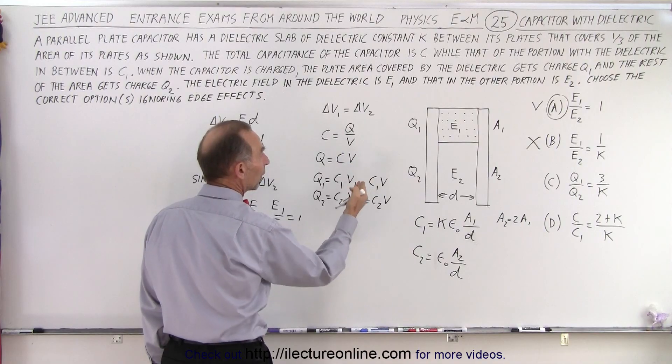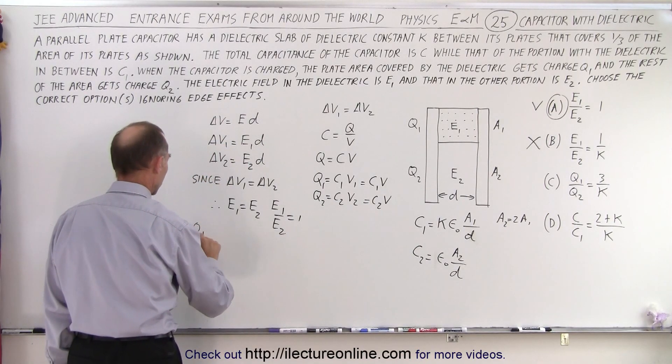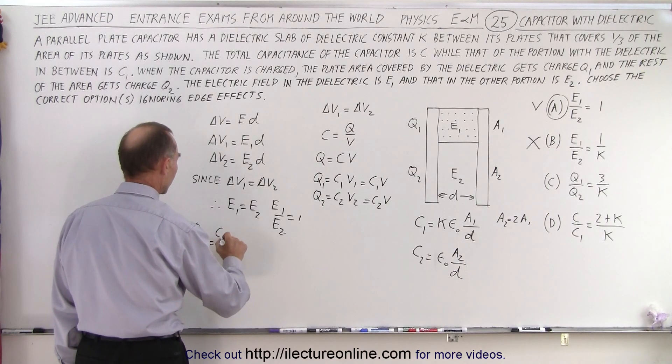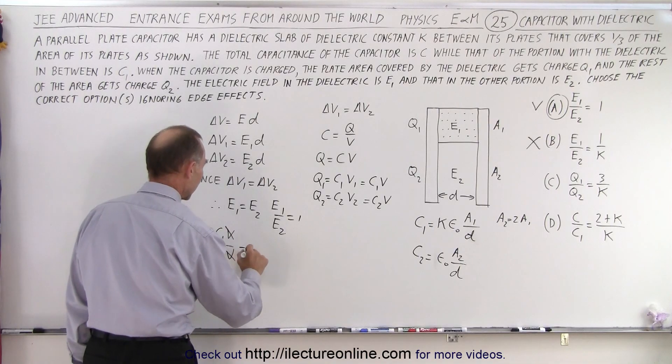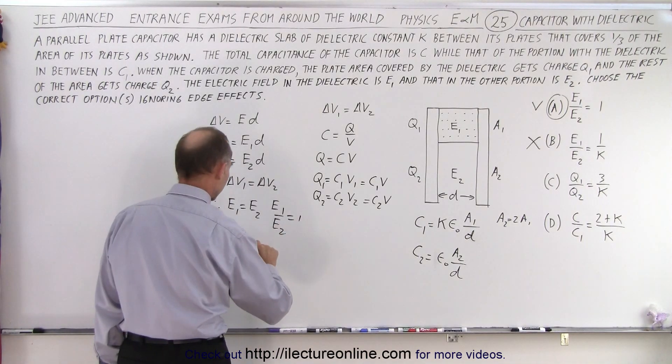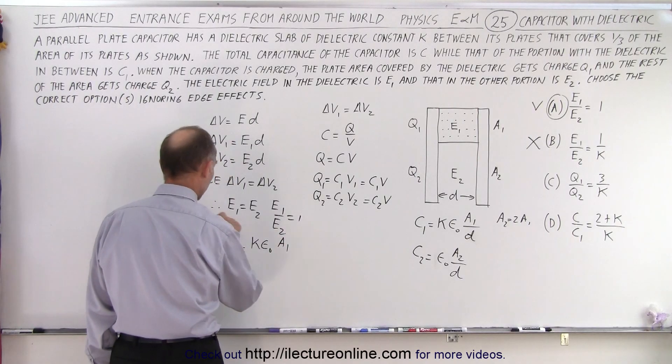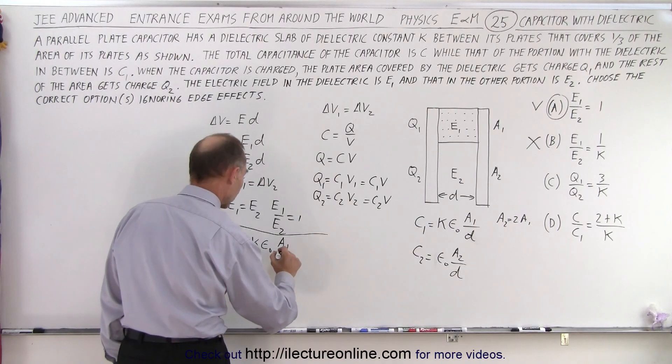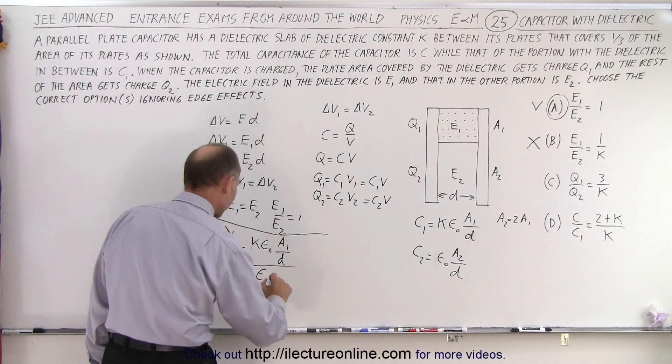So we know that Q1 over Q2 is equal to C1V over C2V, of course the V's are the same, and so C1 is equal to K epsilon naught times A1, and let me draw a line here so we don't get confused, over D divided by C2 which is epsilon naught.